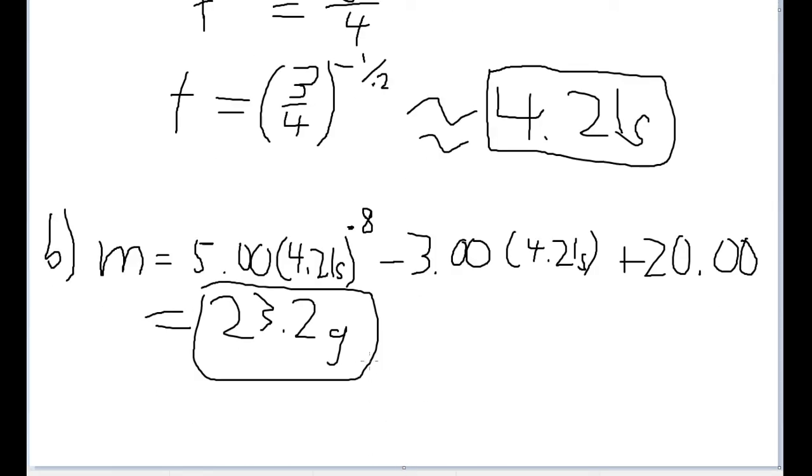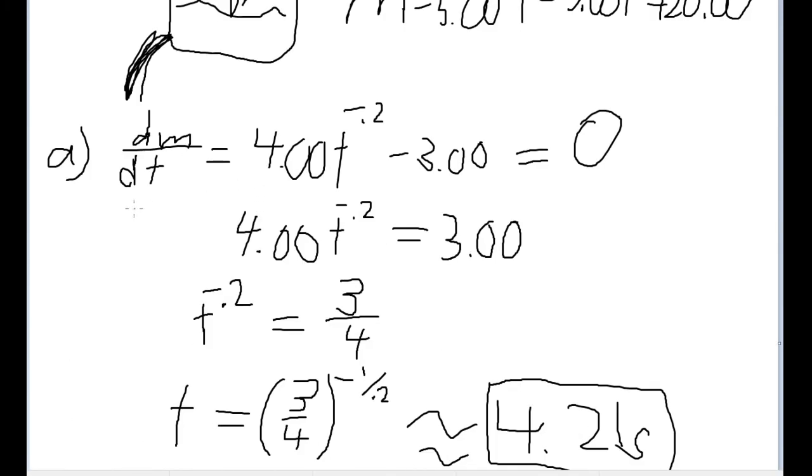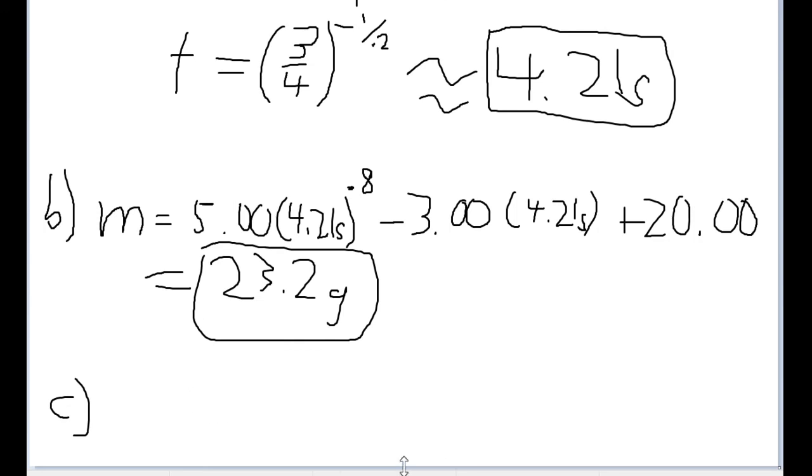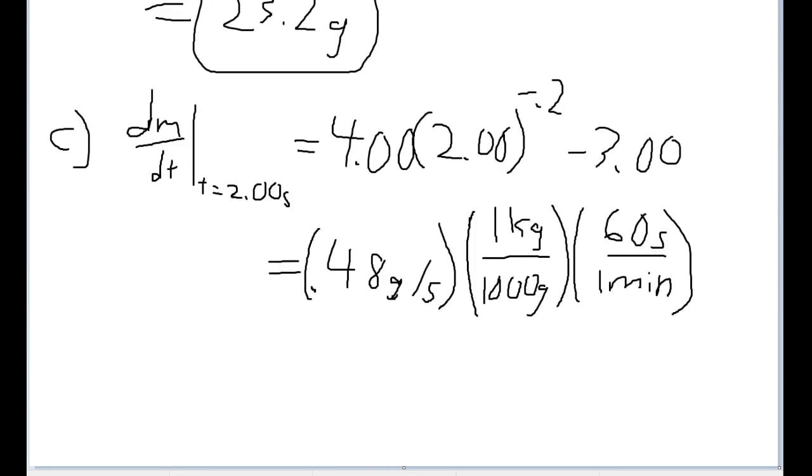Part C asks us to, in kilograms per minute, find the rate of mass change at various times. So Part C specifically, we're supposed to find the rate of change of mass when t is equal to 2.00 seconds. Now because this time the problem actually is asking for us to find the rate of change of mass, we will be plugging the value into our derivative here, into our formula for the rate of change of the mass. So I'm going to go ahead and plug that value in for the function right now. So here I have plugged in the 2.00 for time into the derivative function here. And it gave me a value of 0.48 grams per second.